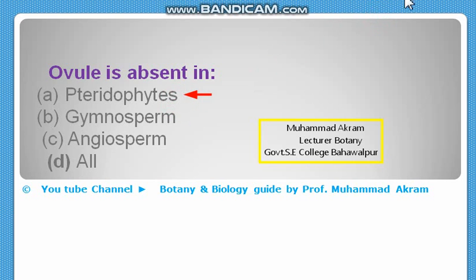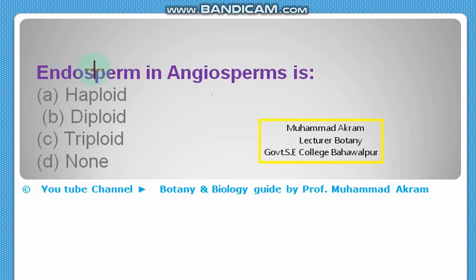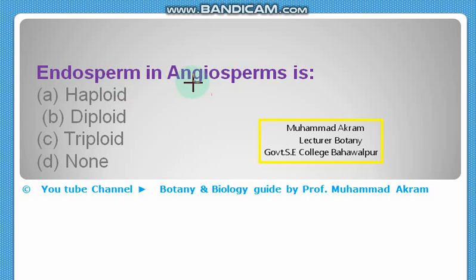The endosperm in gymnosperms is haploid, while the endosperm in angiosperms is — the right option is triploid. This is the right option.